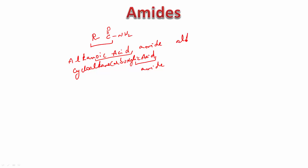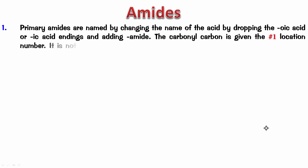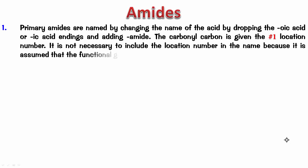So this is going to be alkanamide, and this is going to be cycloalkane carboxamide. The first rule says that primary amides are named by dropping the 'oic acid' or 'ic acid' endings and adding 'amide'. The carbonyl carbon is given the number one location. It is not necessary to include the location number in the name of the amide because we already know that particular carbon is number one.